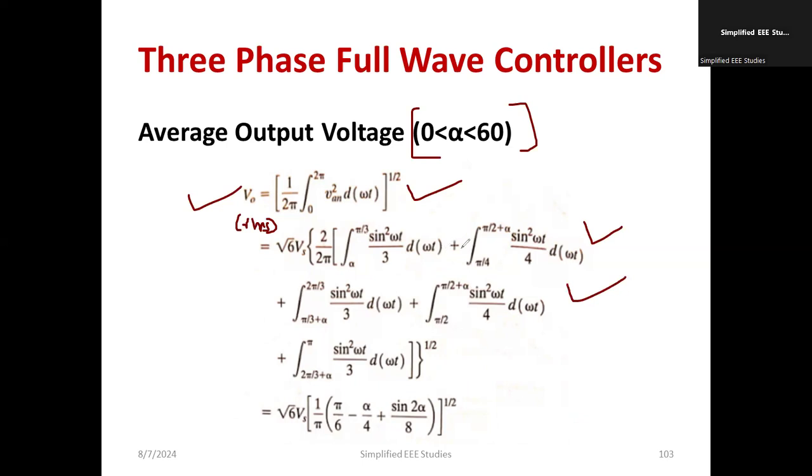Then π/3 plus α to 2π/3, then π/2 to π/2 plus α. Ultimately, we are splitting the integrals like this. When you solve, you will get √2 √6 Vs, 1 by π (π - 6 - α/4 + 2α/8), the whole to the power 1/2, that is square root. This is the expression for average output voltage of three-phase full-wave controllers.